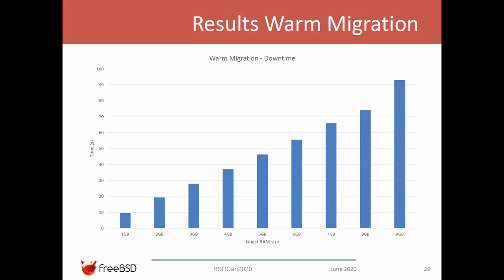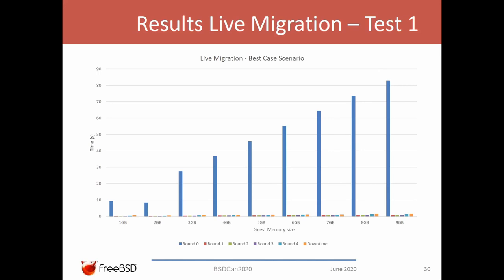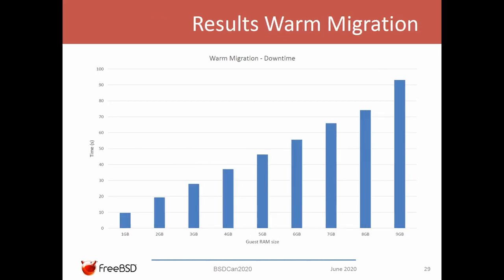For warm migration results, we ran the test for guests with memory from one gigabyte to nine gigabytes of RAM. We can see that the downtime increases in a linear way, which is expected. In this case, the only bottleneck should be the network.